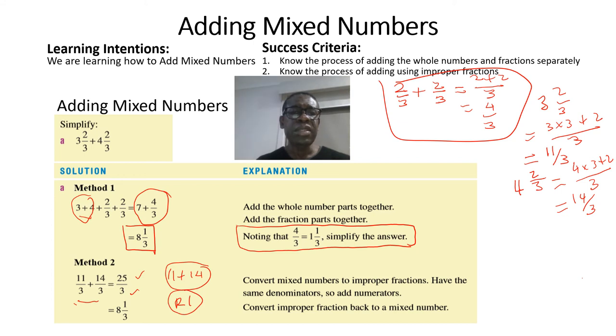So 8 1/3. We have the same answers using the two separate methods, because this is a closed question, so we expect to have one single answer irrespective of the method that we use. Thank you for listening.